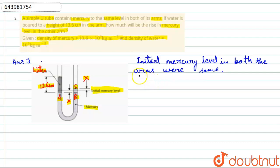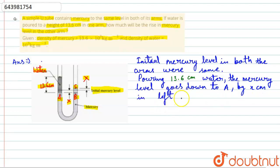Pouring 13.6 centimeter water, the mercury level goes down by x centimeter in the left arm and rises by x centimeter in the right arm. Pressure at